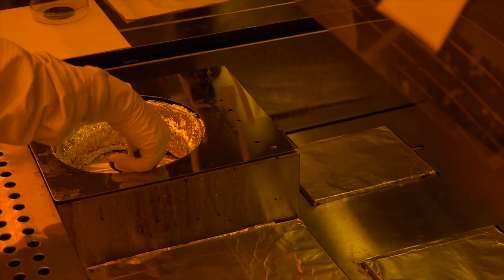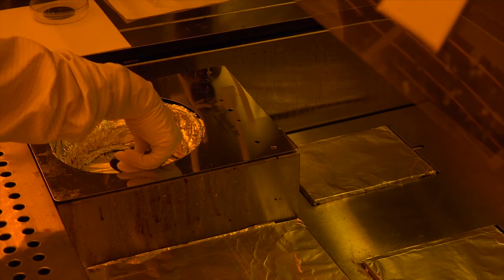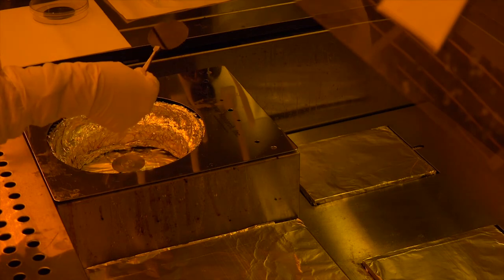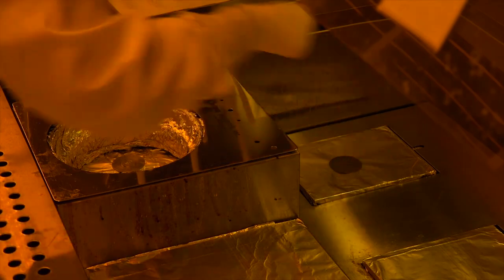After spinning the EBL resist, we remove the wafer from the spin coater and bake the wafer on a hot plate at 180 degrees Celsius for 2 minutes. This removes any remaining solvent from the EBL resist and solidifies it into a solid, thin polymer film.